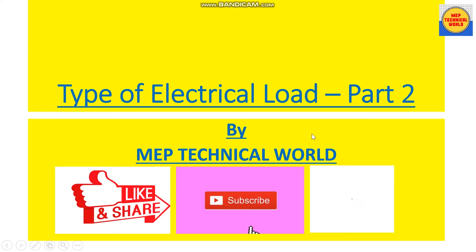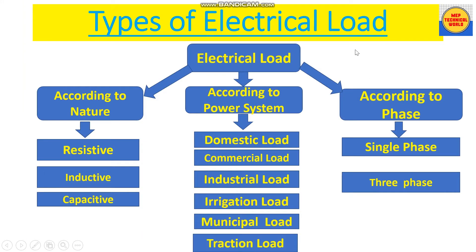Now let's discuss the classification of electrical loads. Classification is on the basis of nature, power system, and phase. According to nature, we have already discussed resistive load, inductive load, and capacitive load in the previous video. According to power system, we have domestic load, commercial load, industrial load, irrigation load, municipal load, and traction load. According to phase, we have single phase load and three phase load. We will talk about each load step by step.